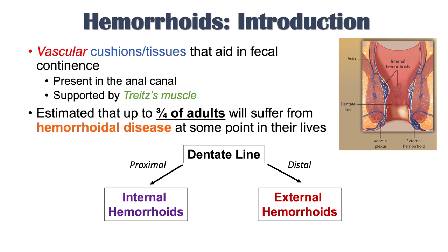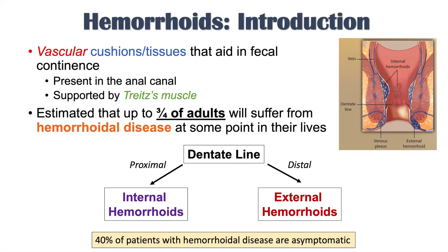When referring to internal and external hemorrhoids, we are referring to the signs and symptoms associated with hemorrhoidal disease. It's important to note that 40% of patients with hemorrhoidal disease are asymptomatic — they don't experience any symptoms. So 40% of patients will have no symptoms at all.